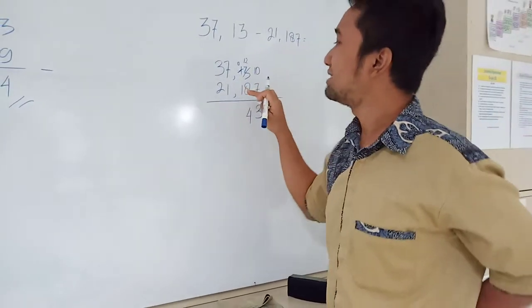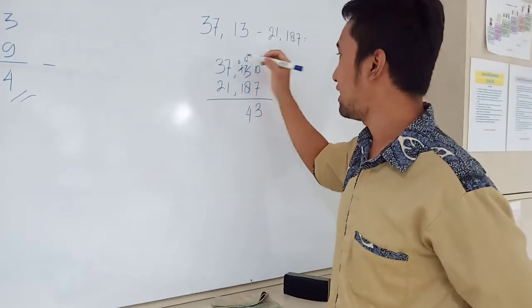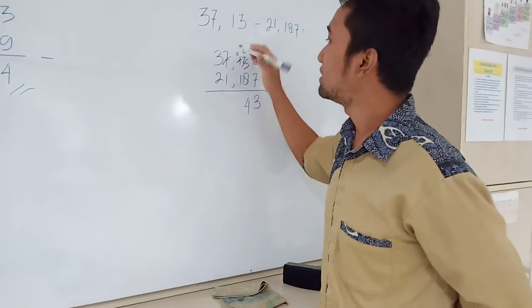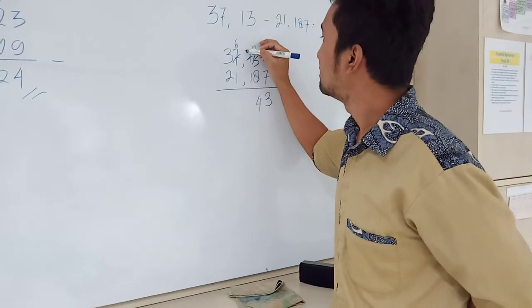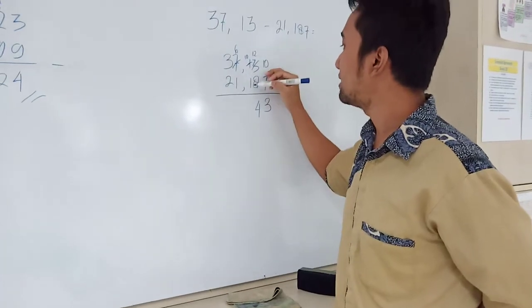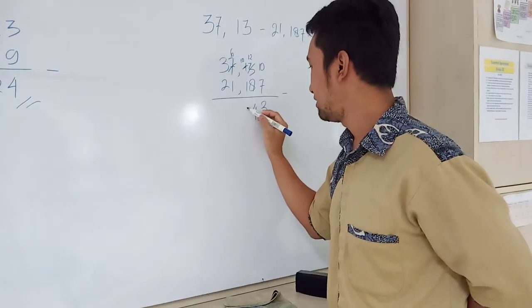And then 0 minus 1. Is it possible? No. You cannot again. And then borrow from this one to this 6. And this is 10. 10 minus 1. What is it? 9. Good.